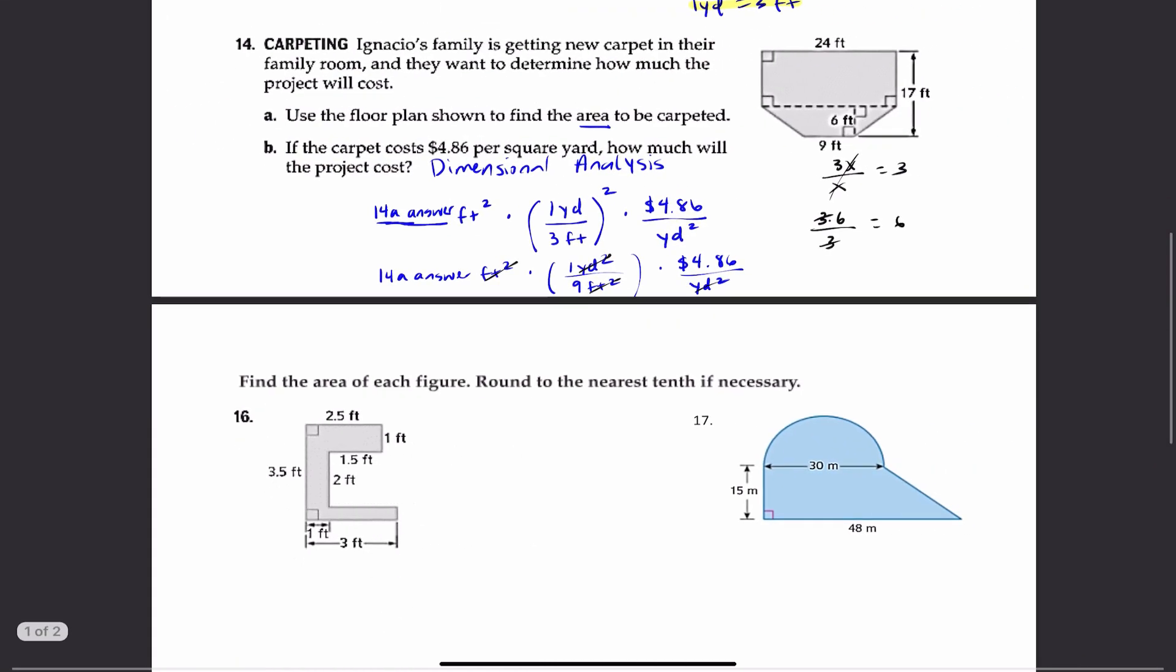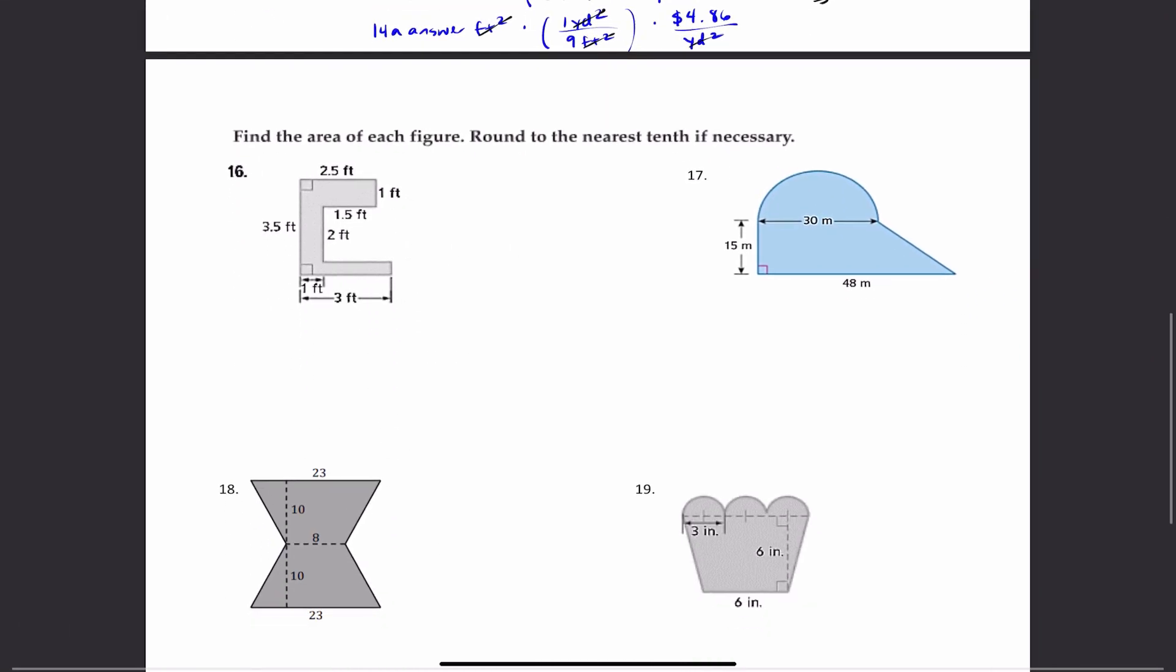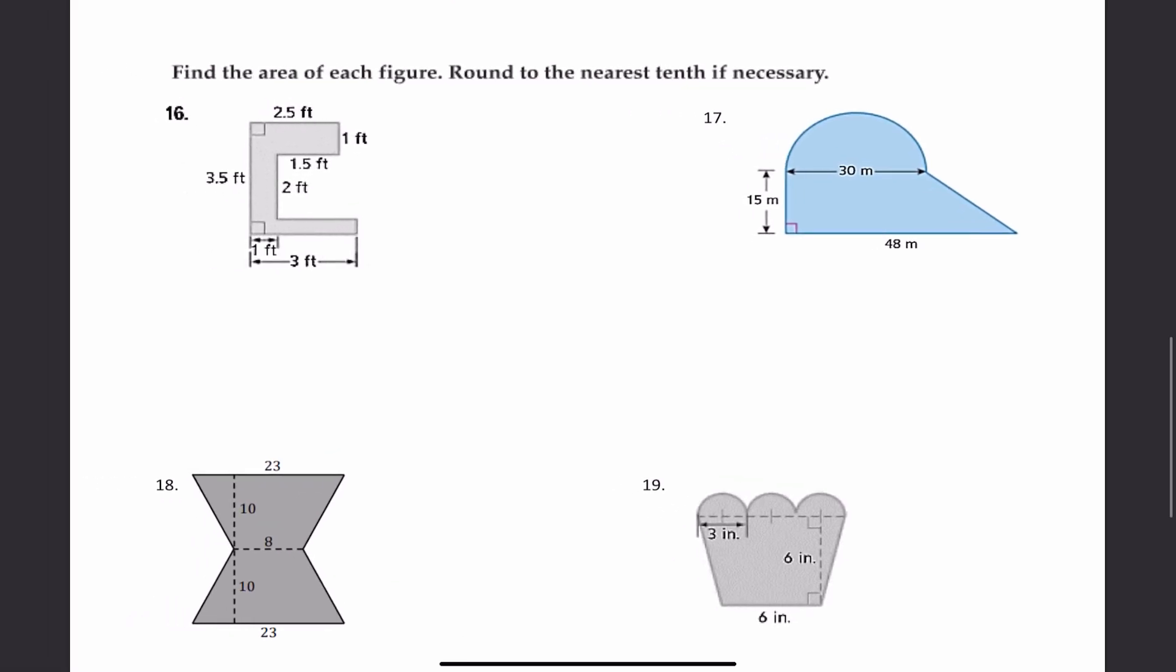All right? Then 16, 17, 18, 19, you're dealing with composite figures. You're going to find the area of each figure here. Round to the nearest tenth if necessary. So I'm just going to give you hints. We have a lot of parallelograms on this one or rectangles.